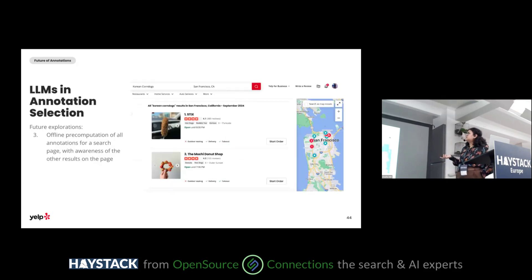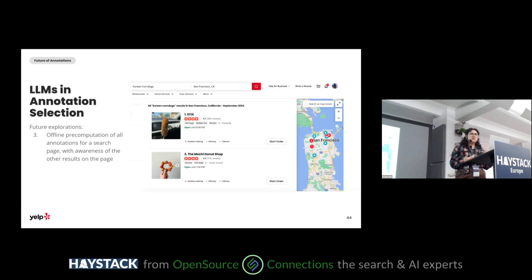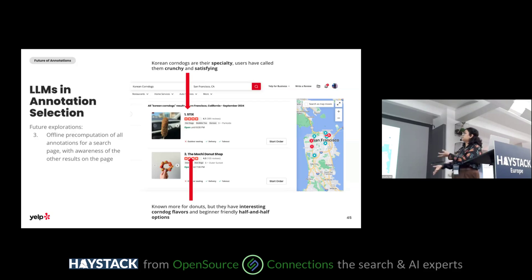LLMs could also generate an annotation directly for the business rather than selecting from existing data. Given the context of a search query and all search results on the page, an LLM could decide what makes each business relevant and appealing and then generate an annotation. For example, for Korean corn dogs, an LLM might decide the first result's specialty is Korean corn dogs, while the second business's differentiator is beginner-friendly half-and-half options. This could also be useful for generic queries like 'restaurants' and 'food.'